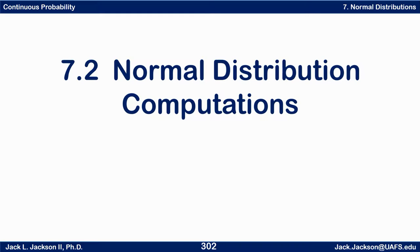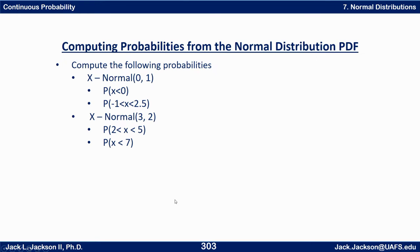Let's look at some computations with normal distributions, both probability and inverse probability computations. We're going to build on what we already know, and then ultimately there are going to be some shortcuts that are going to be very nice that we'll show you before we get to the end of the video. So how can we compute the following probabilities? X is normal with mean zero and standard deviation one — in other words, standard normal.